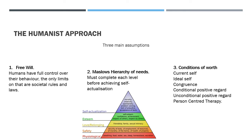The third assumption is the conditions of worth, from Rogers. We have a current self — how we see ourselves now — and an ideal self — what we want to be. How closely these match is called congruence. The more congruent we are, the more mentally healthy we are. The further apart our current and ideal self, the more incongruent and mentally unhealthy. This may stem from conditional positive regard — where love is conditional, such as 'I'll only love you if you get 100%' — or unconditional positive regard, where there are no conditions placed on love. Person-centred therapy focuses on increasing congruence and unconditional positive regard.